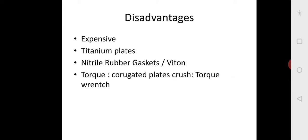Disadvantages include the initial cost being very expensive. Even titanium plates can be used, adding to cost. The gaskets are not ordinary natural rubber but high quality synthetic rubbers. Proper torque must be applied during tightening because the gap is very small — a proper torque range must be used for assembly and disassembly.